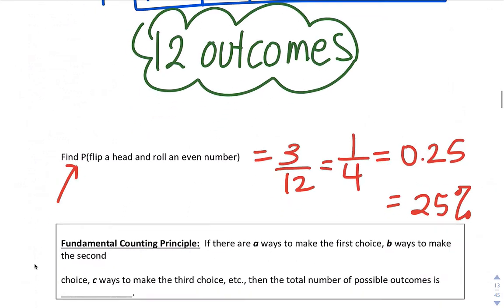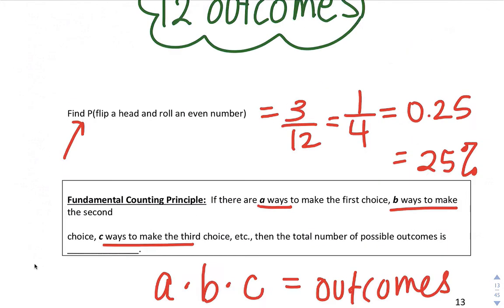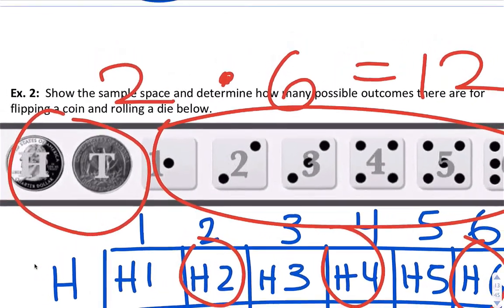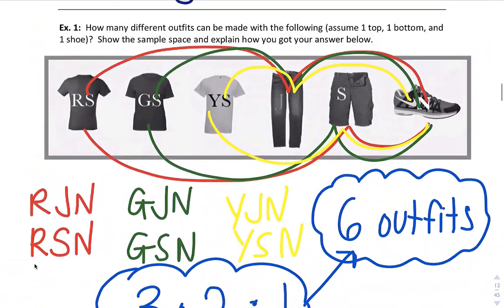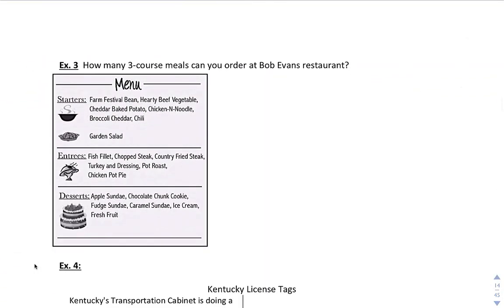So this thing that we've done is called the fundamental counting principle. If there are A ways to make the first choice, B ways to make the second, C to make the third, then you can multiply those. A times B times C, and that will be the number of possible outcomes. Notice we could do it for this problem with a coin and a die, two times six, and we also did it for the outfits, three times two times one. So you can multiply the independent events.